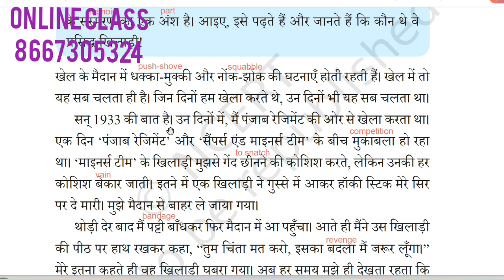San 1933 ki baat hai — he is talking about an incident from 1933. In those days he was playing for the Punjab Regiment. One day there was a competition between Punjab Regiment and the Minors team. A player from the Minors team was trying to snatch the ball from him, but all his efforts went in vain — the opponent could not get the ball.